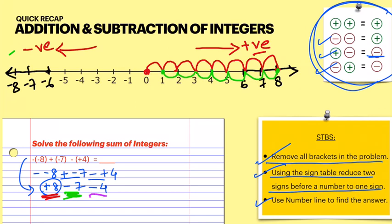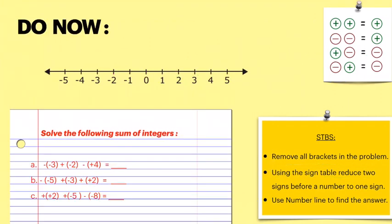The next number is minus four — again negative, so we go four steps to the left: one, two, three, four. We reach minus three. So the answer for this question is minus three. I hope you're able to revise how to do this kind of problem.